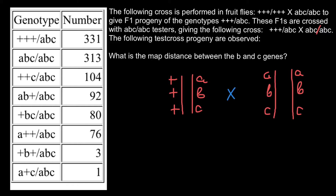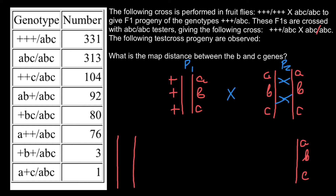Parent 2 can only produce one gamete type — small a, small b, and small c — regardless of crossing over. We can't see any variation from this parent. But parent 1 can produce different variants. The first is the parental variant: if crossing over didn't happen, we get plus, plus, plus on one chromosome and small a, small b, small c on the other.